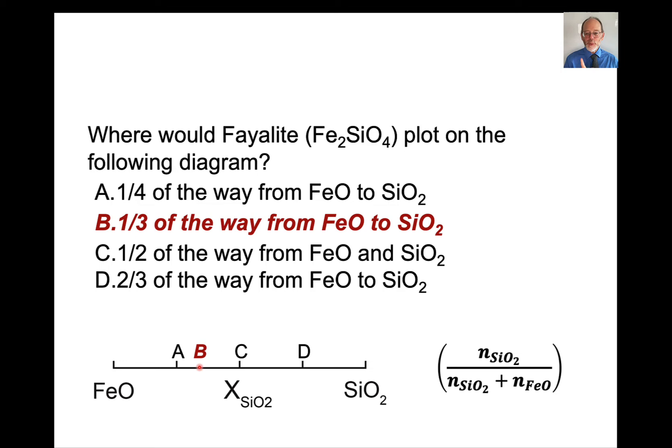This is a super important point. If you're plotting compositions and you have one component that is more abundant than another component, so here FeO is more abundant than SiO2, there's two moles of FeO, one mole of SiO2, the plotting composition has to be closer to the component that is more abundant. Please always remember that. It will save you a world of hurt. I use that all the time to figure out if I'm plotting compositions correctly.